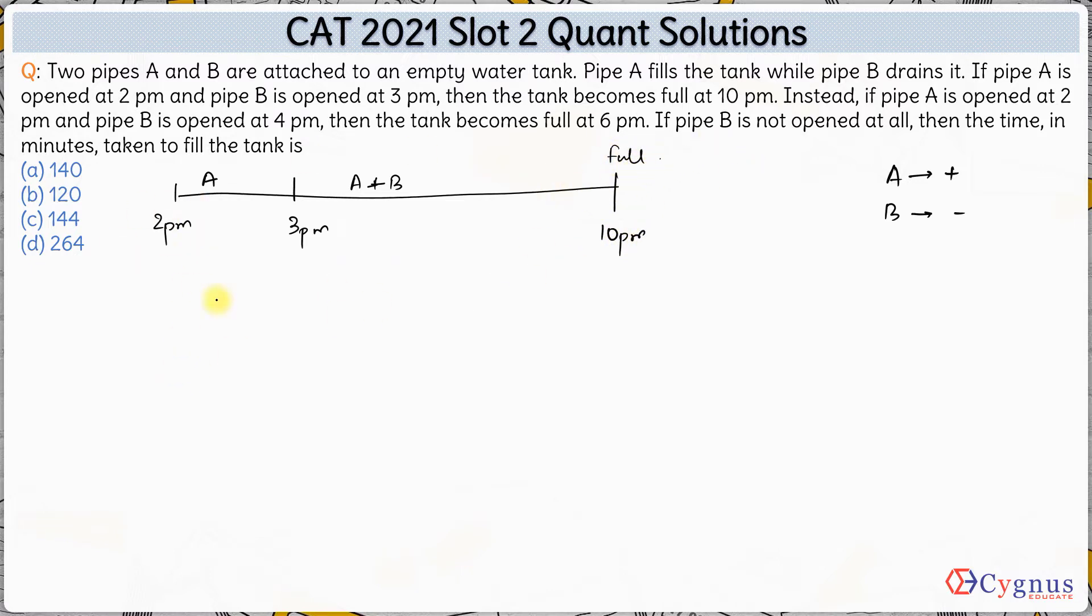Instead, instead of this whole timeline, instead if pipe A is opened at 2pm and pipe B is opened at 4pm, so after 4pm both of them are working. Now the tank becomes full at 6pm. The tank is full at 6pm.